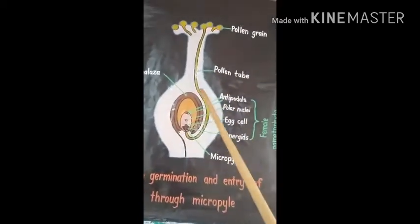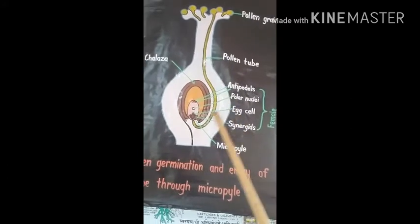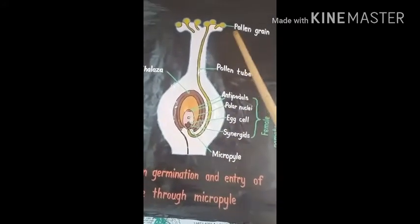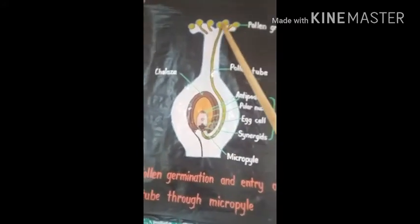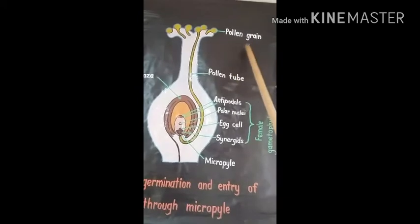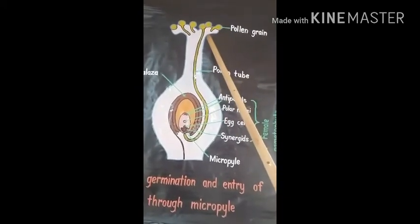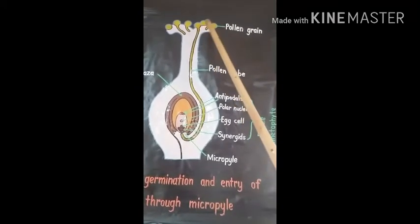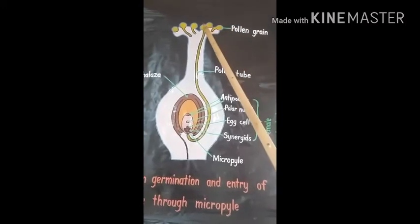This is the female part, known as gynoecium. In this female part, this yellow color structure is the pollen grain, which is the male part, transferred by the process of pollination.